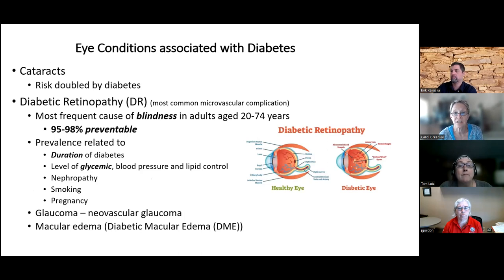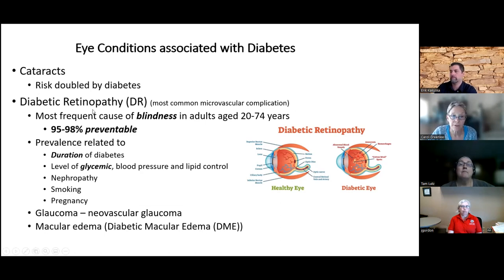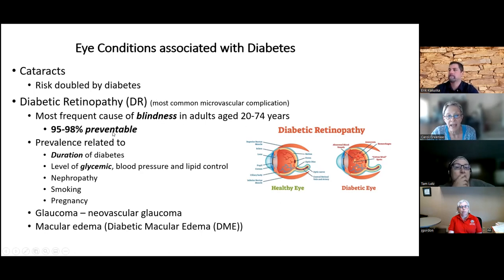People with diabetes can get eye conditions like anybody else, but the eye conditions specifically associated with diabetes are first of all cataracts, which are doubled in incidence, and diabetic retinopathy — the most common microvascular complication. It's also the most frequent cause of blindness in working age adults, and 95 to 98% of this blindness could be prevented.